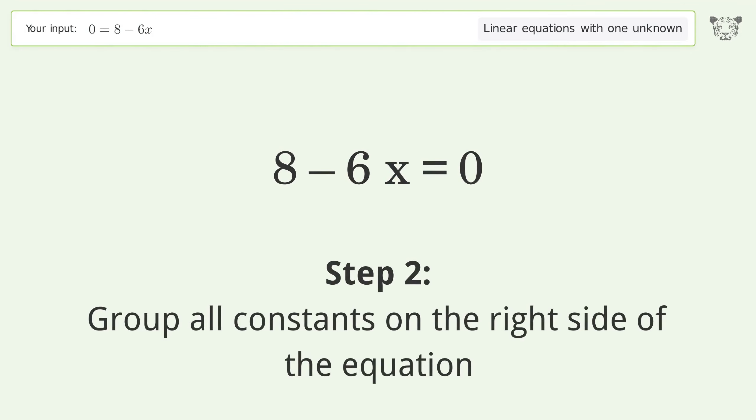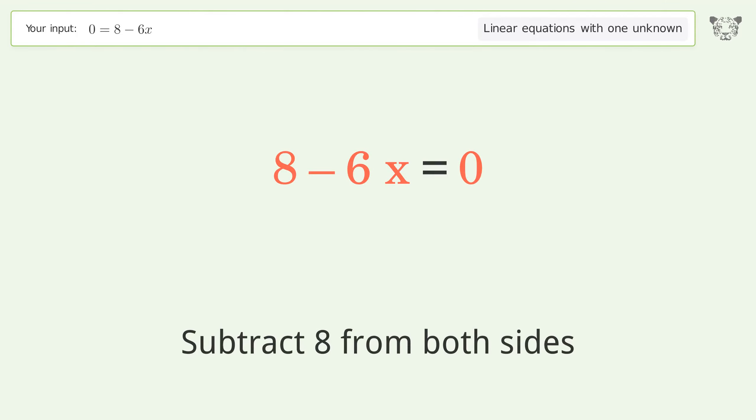Group all constants on the right side of the equation. Subtract 8 from both sides.